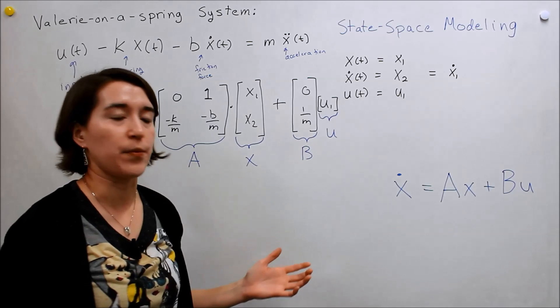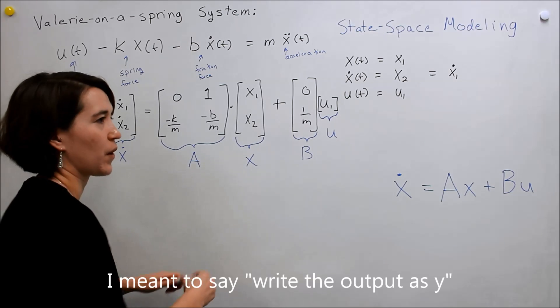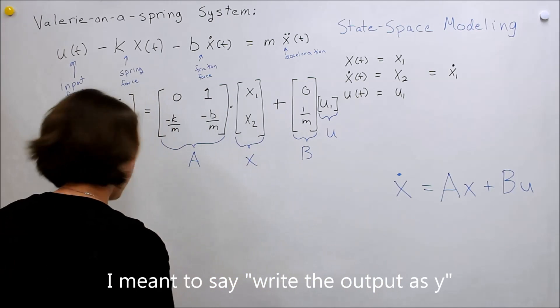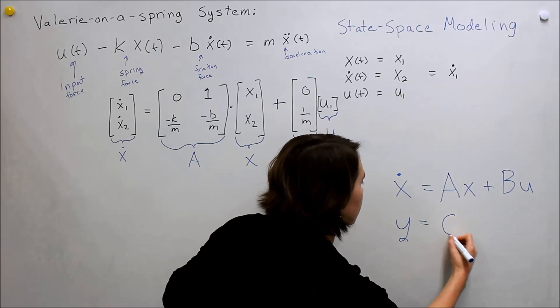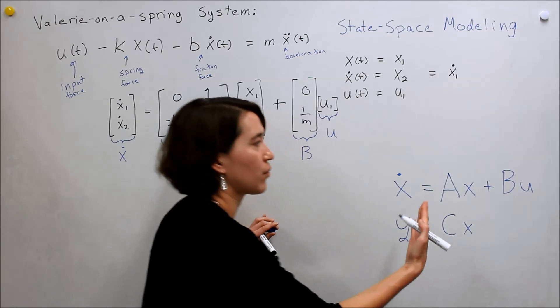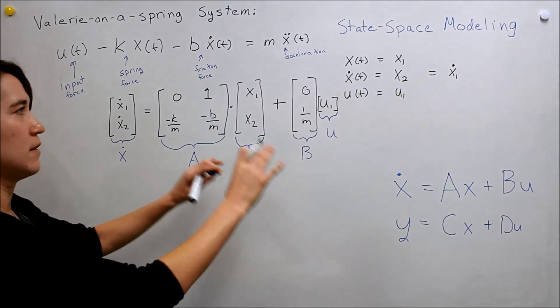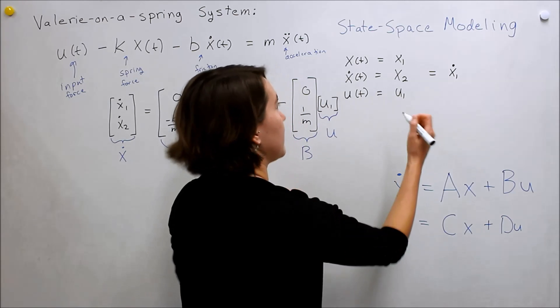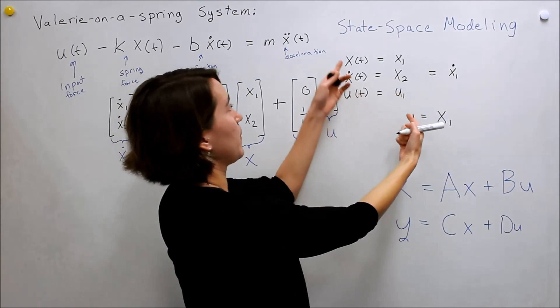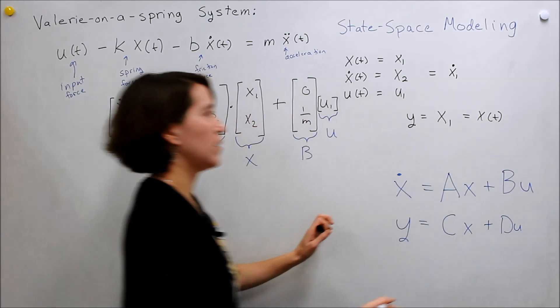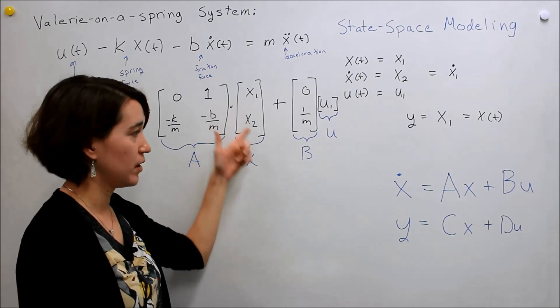We've modeled our Valerie-on-a-spring system from this original equation and we've put it into a state space form. We're almost there. We need to look at the output now. So this is our system, but what is our output? Before we decided that x, the position of Valerie, is our output. So in the standard controls language, we write x as y. So we'll put it into a form where y is the output and it will depend on some matrix times the x value, so the states, and it's possible that it might depend on the input value. But first, let's just state that our output, in this case, our output y is going to be equal to x1, which is, remember, equal to x.